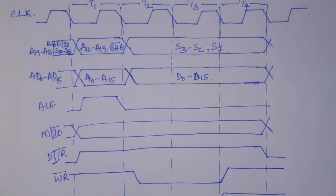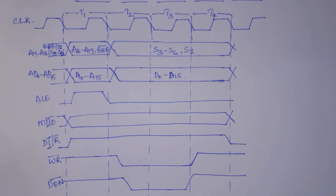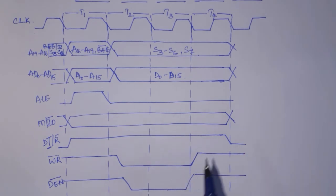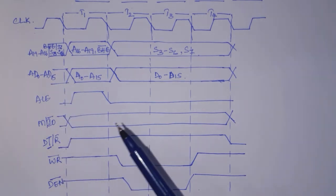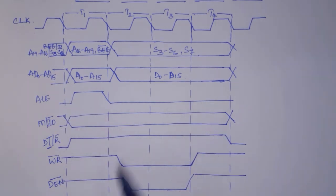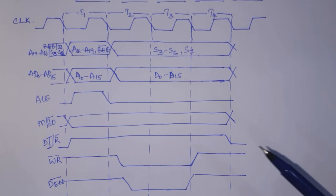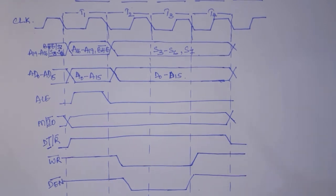These are the signals represented in case of a write machine cycle. I hope you all understood. It is better to first watch the read machine cycle video — I have explained these signals in detail there. Here I have told you only the difference between the read and write cycle, so for better understanding, first watch the read machine cycle timing diagram and then this one.